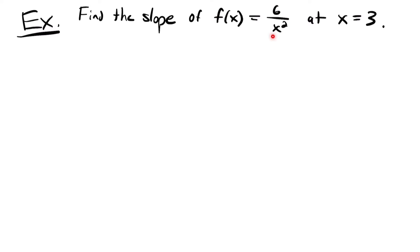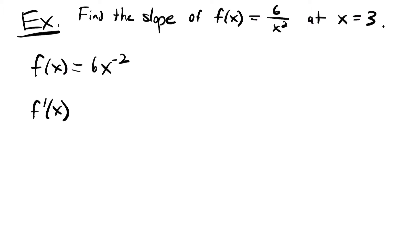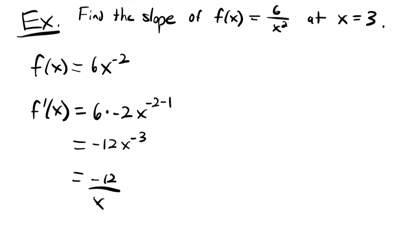Let's find the derivative of 6 divided by x squared. I'm going to rewrite my function because I have x squared in the denominator and I would like to use the power rule. I'll move that x squared up so we'll have a negative exponent. So the function is equal to 6 times x to the negative second power. Using the power rule, f prime of x equals 6 times negative 2 times x to the exponent minus 1, which simplifies to negative 12 times x to the negative third power, or negative 12 divided by x cubed.